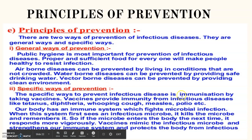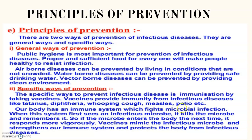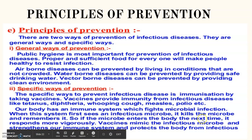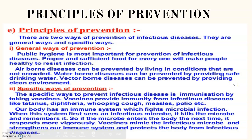Specific ways include vaccination and immunization programs, which have already been implemented in our country and are still ongoing. When our immune system first sees an infectious microbe, it kills the microbe and remembers it. If the microbe enters again, the body responds more vigorously. Vaccines mimic infectious microbes and strengthen our immune system to protect the body from infectious diseases. For COVID-19 as well, we were waiting for the vaccine, and until it arrives we must keep taking precautions. That's all for today — we are completing this chapter with this last topic.